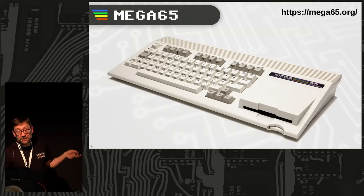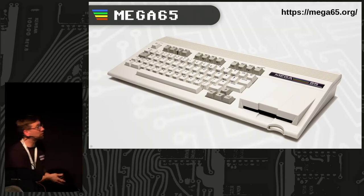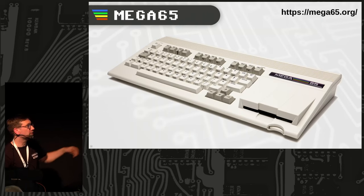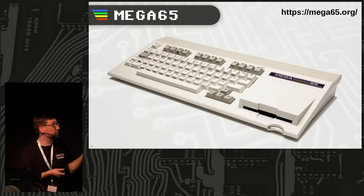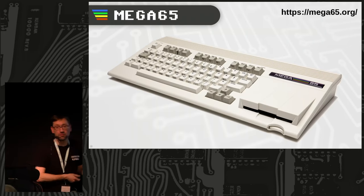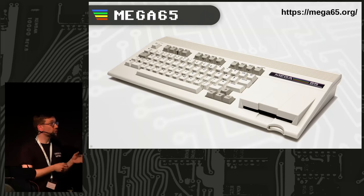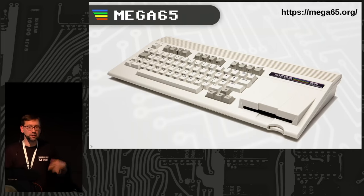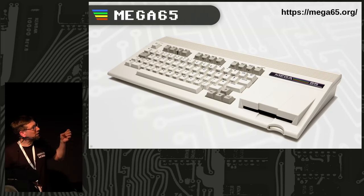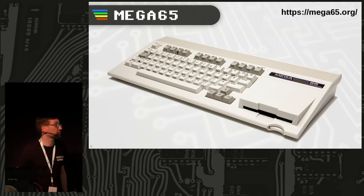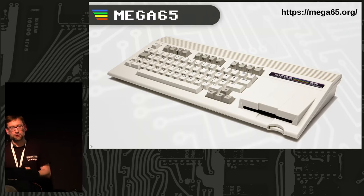The whole MEGA65 platform consists of several parts: the case, keyboard, and FPGA mainboard; the FPGA core implementing the chips and electronics; and the ROM, which is based on the original ROM Commodore developed for the C65. We based it on the original sources and developed it to production level. Since it's an FPGA you can run different cores on the system, and you can also use different ROMs — you don't need to use the original ROM; there's an open ROM available.